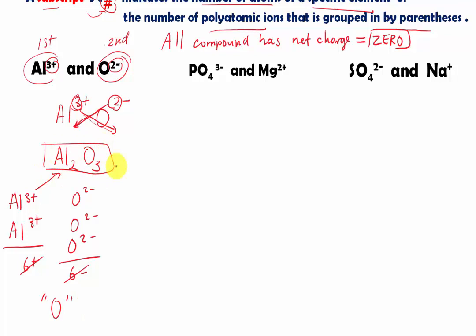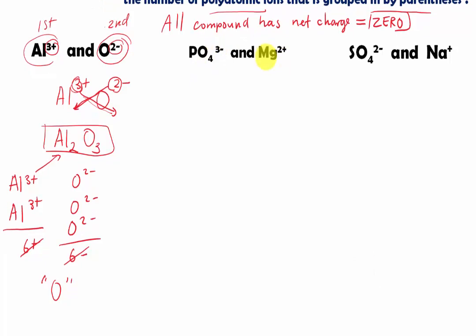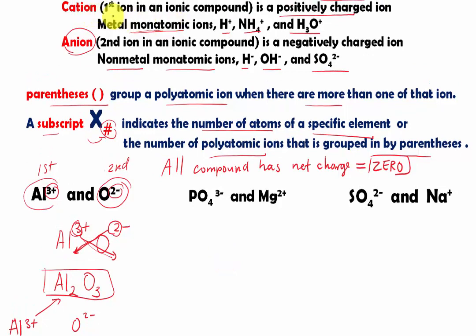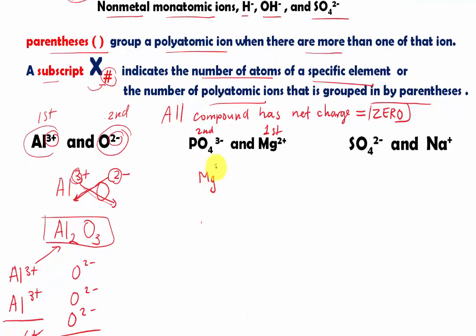Then over here, we have this phosphate right here, polyatomic ions. Then we have magnesium 2 plus. Now which element is first? Of course, the cations always first going back to this rule. First ion. But this one is your first one, and this one is your second one. So let's rewrite it. So I'm going to have Mg 2 plus, then we have PO4 3 minus. Now let's use our method. Let's use our shortcut again.